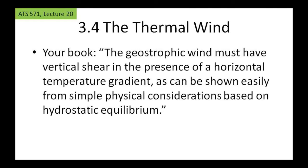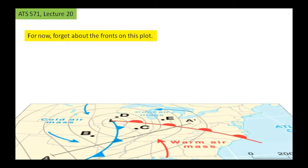We're going to learn about how the geostrophic wind must have vertical wind shear in the presence of horizontal temperature gradients. Another way to think about it is the other way around: if there are horizontal temperature gradients, there must be a wind shear to the geostrophic wind. Before we get into derivations, let's take a look at this map here.